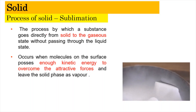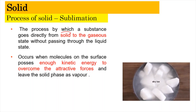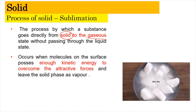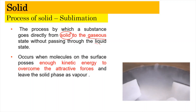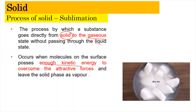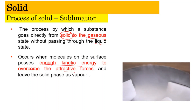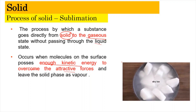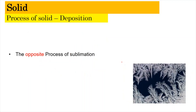Sublimation is a process by which a substance goes directly from a solid to the gaseous state without passing through the liquid state. An example here is dry ice. It occurs when molecules on the surface possess enough kinetic energy to overcome the attractive forces and leave the solid phase as a vapor directly.